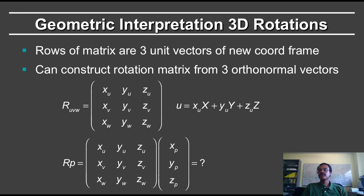We now come to the geometric interpretation of 3D rotations. We can think about the rows of the matrix as being unit vectors of a new coordinate frame — the u-vector, the v-vector, and the w-vector. Where xu is the x-coordinate of the u-vector, yu is the y-coordinate, and zu is the z-coordinate. The vector u equals xu times the x-direction plus yu times the y-direction plus zu times the z-direction.